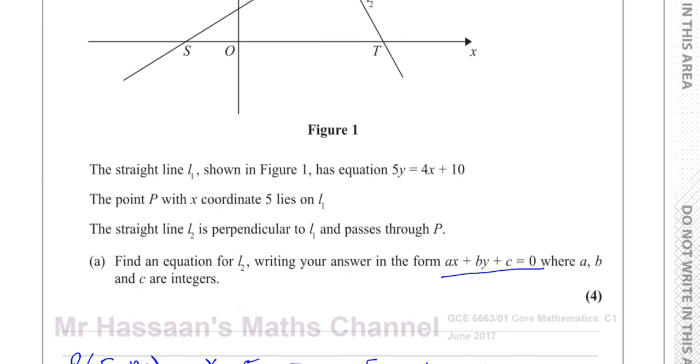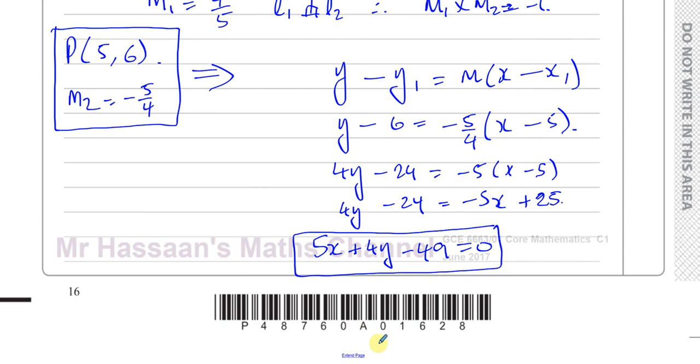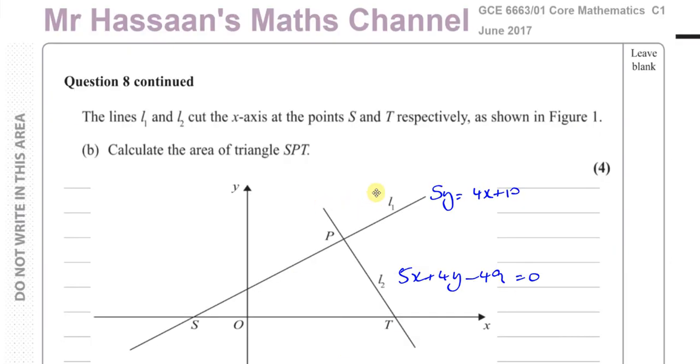Now I'm going to go on to part B. So we have the equation of line 1, equation of line 2. We also have the coordinates of the point P, which are 5 and 6. So we're told that line 1 cuts the x-axis at S, and line 2 cuts the x-axis at T. And we want to find the area of this triangle S, P, T.